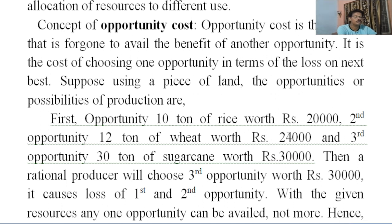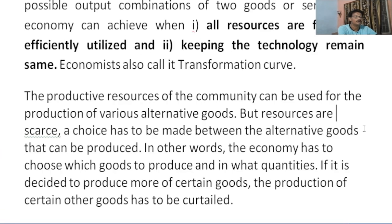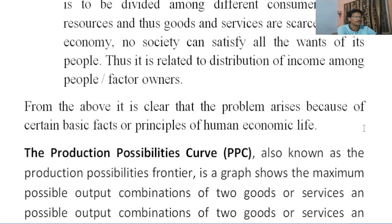Amongst the two remaining opportunities, the next best opportunity is production of wheat, which could gain 24,000 rupees. This is the opportunity cost in economics — opportunity cost is the next best opportunity foregone. Related to this concept, another concept is the production possibility curve or frontier.